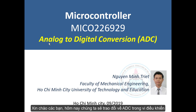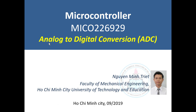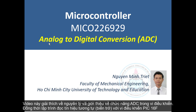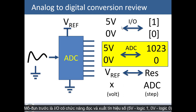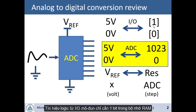Welcome back to the microcontroller course. In this video I will show you what an analog-to-digital conversion module is in a microcontroller, and we will try to program using an ADC module to read an analog signal. We have already learned about the IO modules, where if a signal is 5 volts it translates to a 1 bit in RAM, and 0 volts translates to 0 logic — so it uses only one bit in RAM.